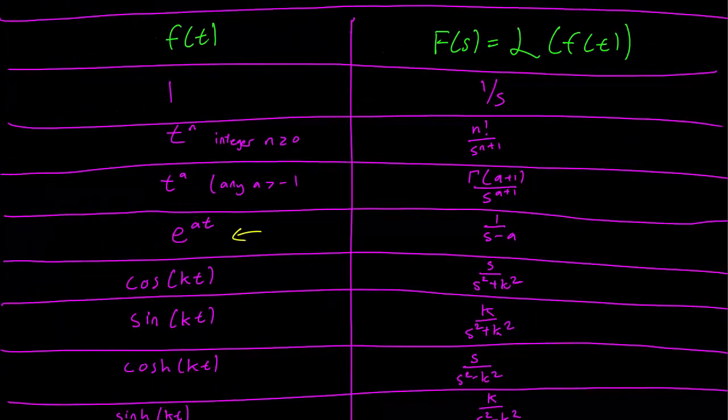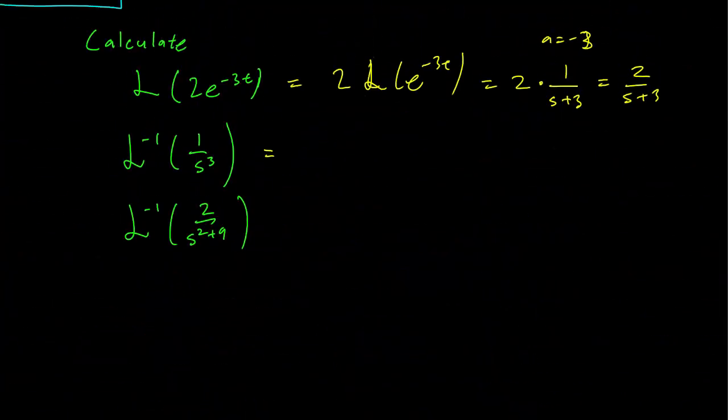So let's look at the inverse transform of 1 over s cubed. Now we have to look at the right column and see what function on the left it corresponds to. We see that the term that looks most promising is this one. We need that s to the 3 in the bottom, so we need to set n equals 2. But that will give us a 2 factorial on the numerator, so we have to adjust the function a little bit.